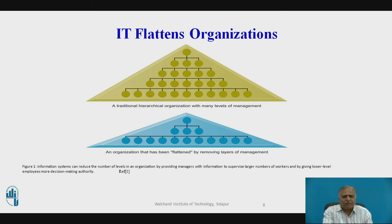In IT flattened organizations, behavioral research has theorized that information technology facilitates the flattening of hierarchies by broadening the distribution of information to empower lower-level employees and increase management efficiency. IT pushes decision-making rights lower in the organization because lower-level employees receive the information they need to make decisions without supervision. Managers now receive more accurate information on time, enabling them to make decisions much faster, so fewer managers are required.